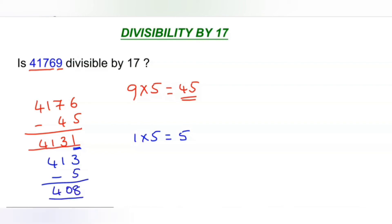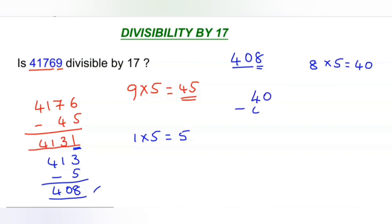Now, is 408 divisible by 17 or not? We are still not sure, so let us repeat the same process. Take the number 408, take the last digit 8 and multiply again with 5, giving us 40. Remove this 40 from the rest of the number other than the last digit. So 40 minus 40 is nothing but 0. Whether you are getting 0 or a number which is divisible by 17, then you can say the given number is divisible by 17. Here the result is 0, which is divisible by 17. 0 is divisible by any number.